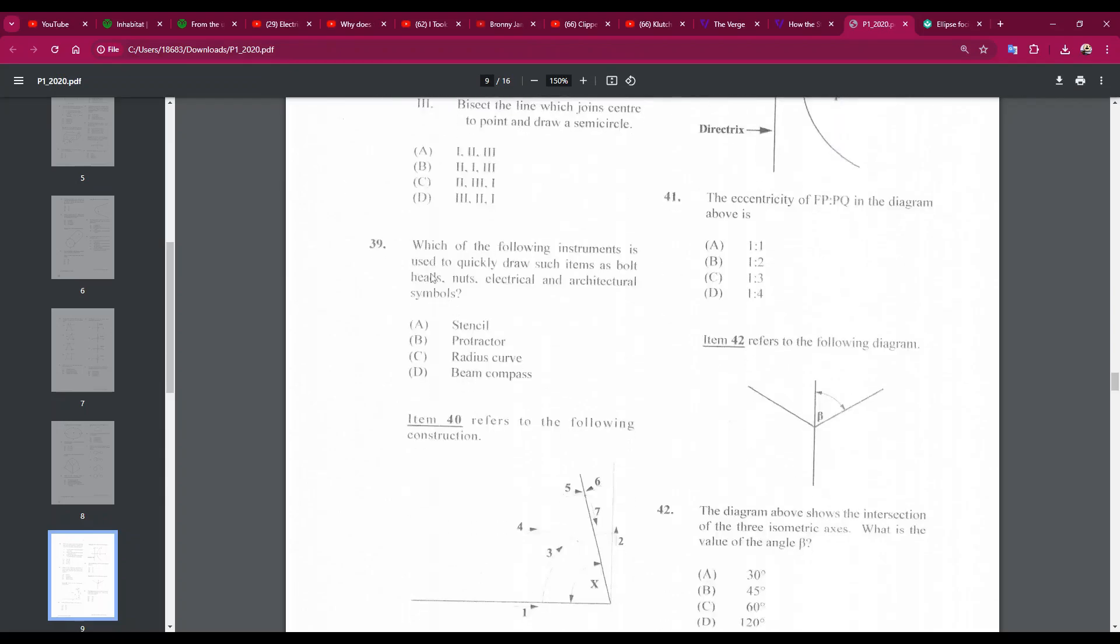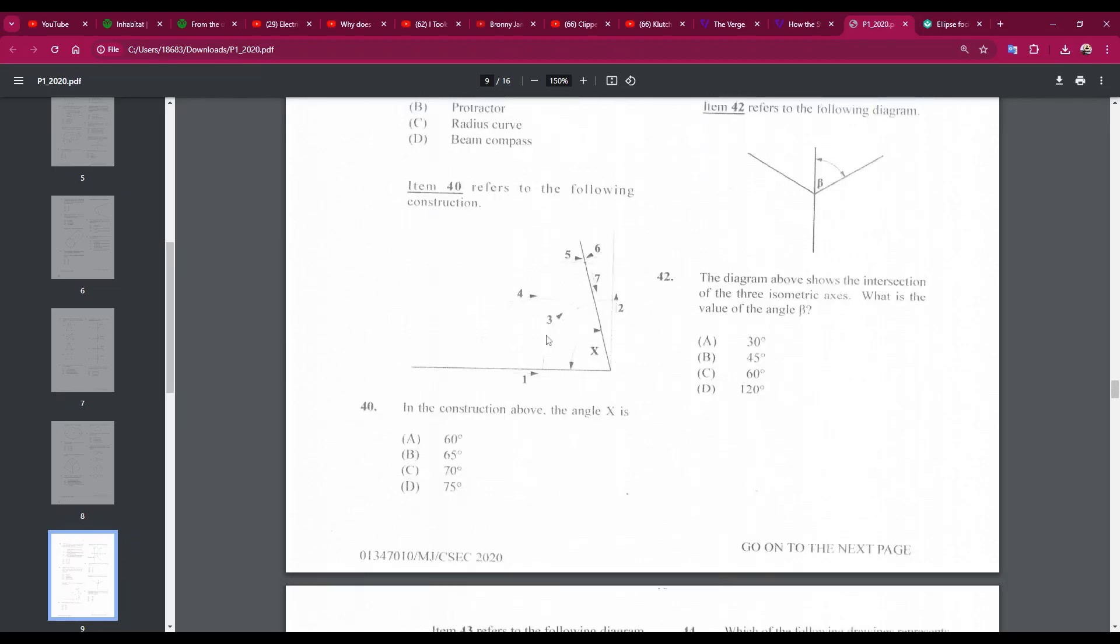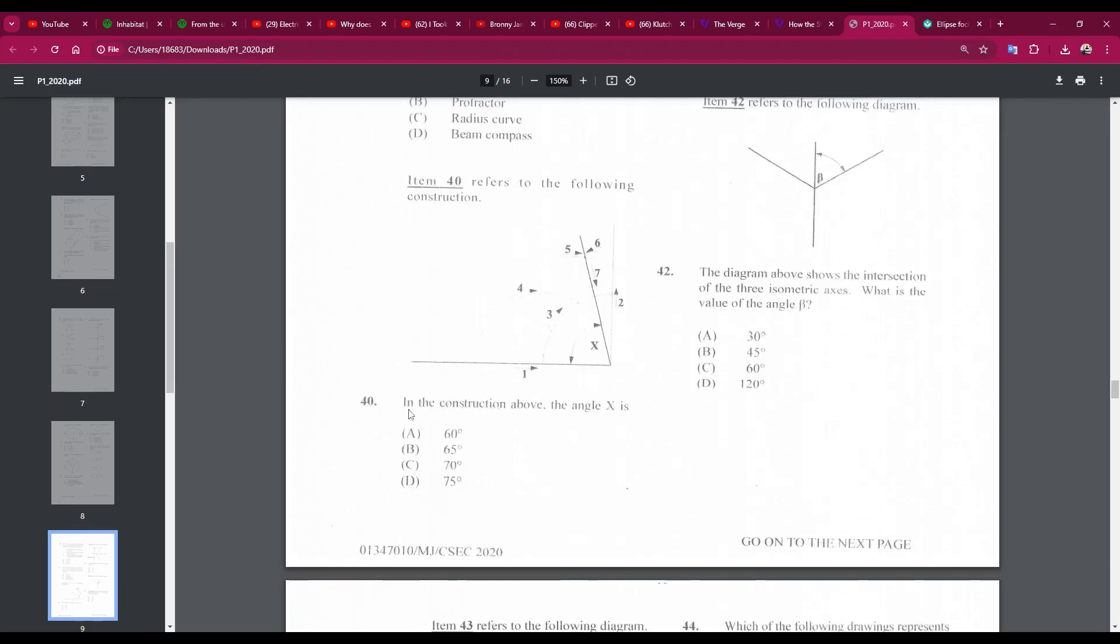Number 39: which of the following instruments is used to quickly draw items such as bolt heads, nuts, electrical and architectural symbols? That's a stencil, A. I think we had this question before. Number 14 - wait, number 40: the construction above, the angle X is?